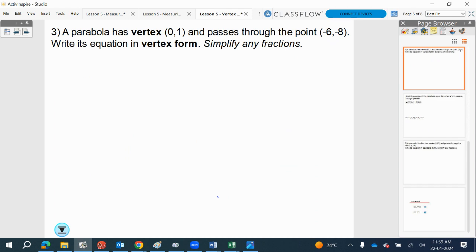Okay, here we go. So a parabola has a vertex 0, 1, passes through the point minus 6, minus 8. Write the equation in vertex form. So in vertex form, we've got y is equal to a bracket x minus h squared plus k. We're given the vertex here, so we're given h and k. What is the value of h? Zero. What is the value of k? One. So inserting that, we get y is equal to a bracket x minus h, which is 0, plus k, which is 1. You can simplify that. That's y is equal to a x squared plus 1.